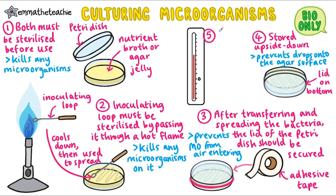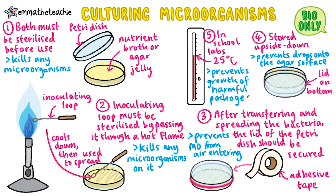Finally, in school laboratories, cultures should be incubated at 25 degrees Celsius or lower. If a higher temperature were used, harmful pathogens would be more likely to grow, so 25 degrees Celsius and lower is safer for schools. In industrial conditions, cultures may be incubated at higher temperatures so that they grow faster. There is a required practical on the culturing of microorganisms, and in this you'll look at the effect of antiseptics or antibiotics on bacterial growth. You'll learn more about zones of inhibition and calculations for this then, so we won't cover it here.